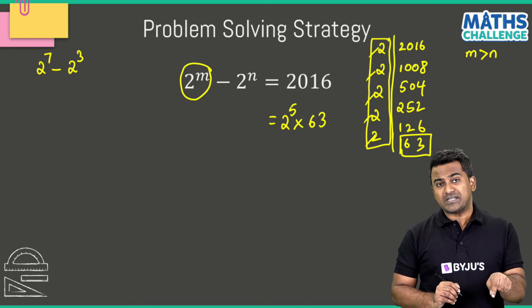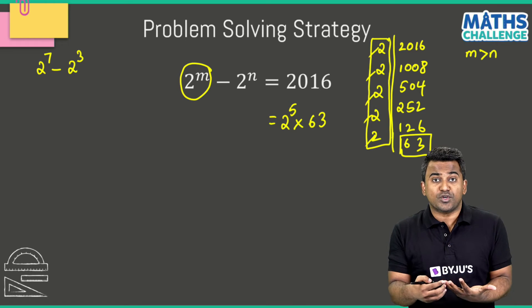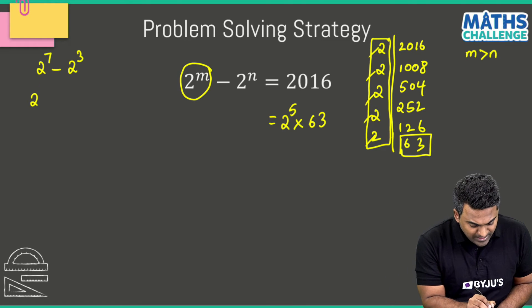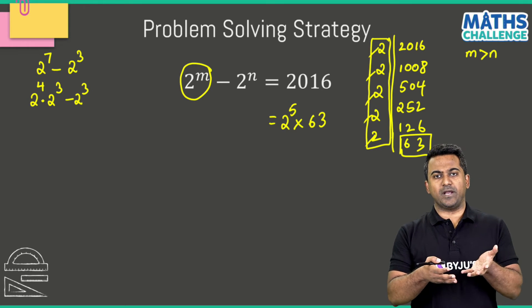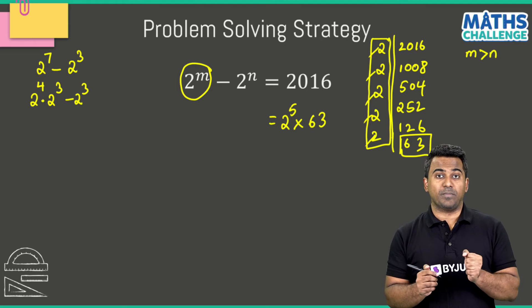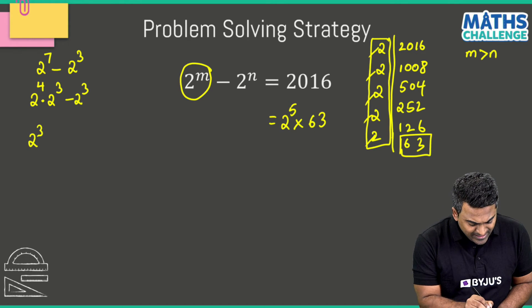Now look, let's suppose you have an equation like 2 to the power 7 minus 2 to the power 3, right? Now 2 power 7 I can write it in terms of 2 power 3, right? So this can be written as 2 to the power 4 multiplied with 2 to the power 3 minus 2 to the power 3. I'm using fairly simple rules here: a to the power m multiplied with a power n equals a to the power m plus n.